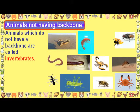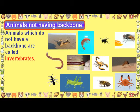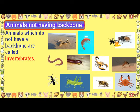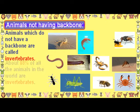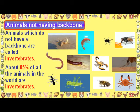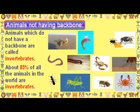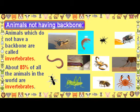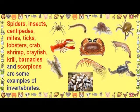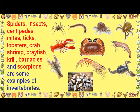Animals which do not have a backbone are called invertebrates. About 85% of all the animals in the world are invertebrates. Spiders, insects, centipedes, mites, ticks, lobsters, crab, shrimp, crayfish, krill, barnacles and scorpions are some examples of invertebrates.